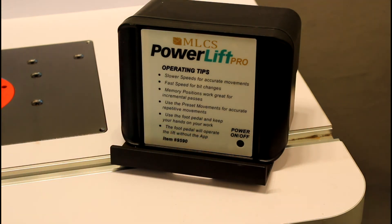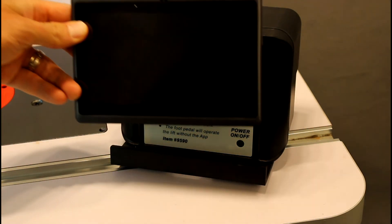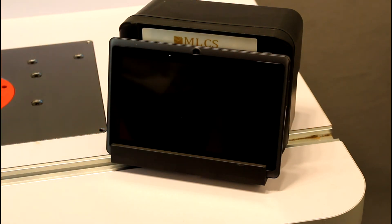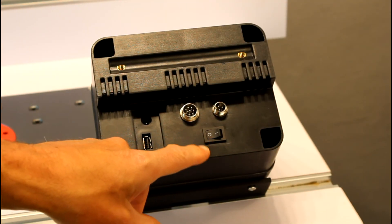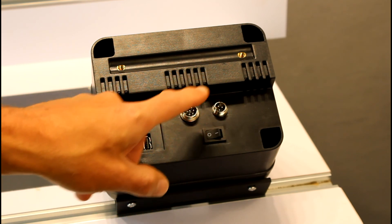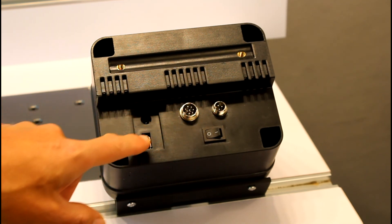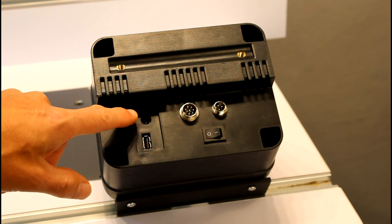On the front, there's a power indicator light and a shelf to hold your Android device. On the back are all the connections for the lift: your power switch, your foot pedal, connections to the lift itself, your USB jack, and your power cord.